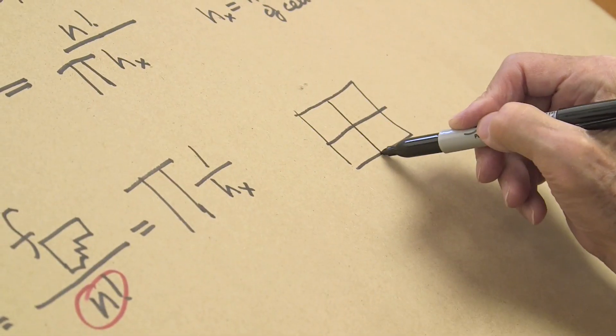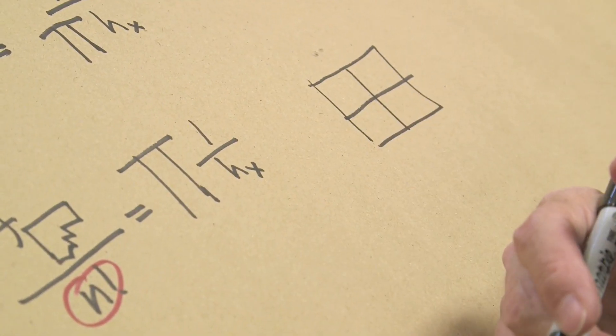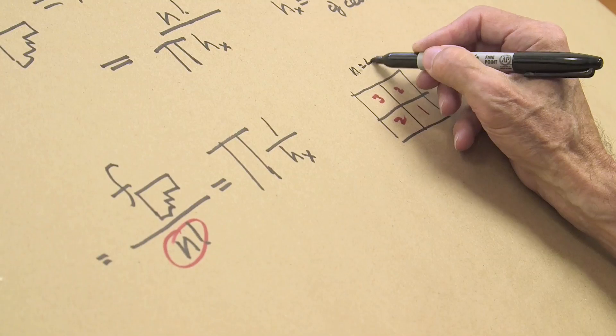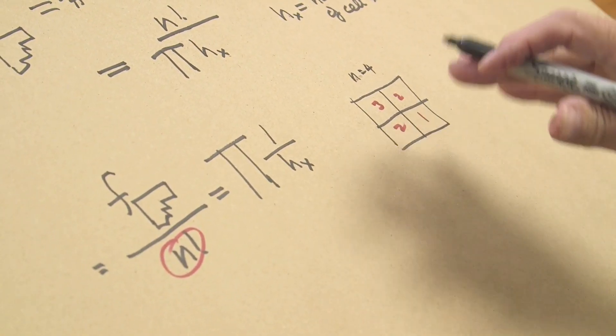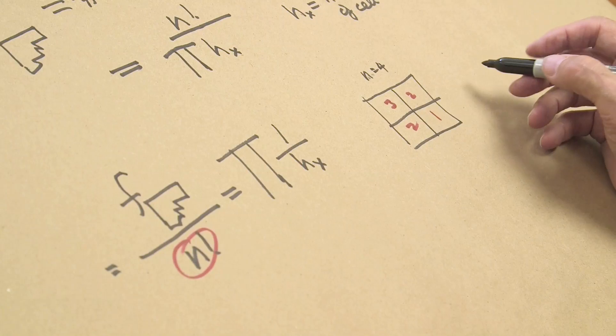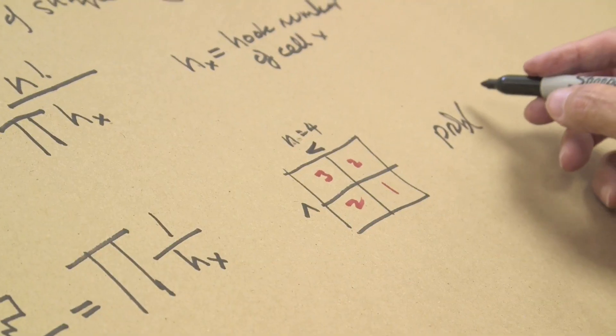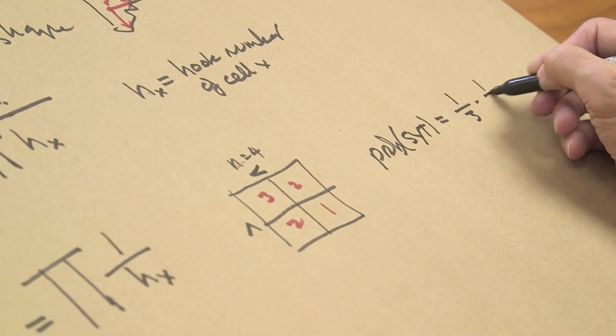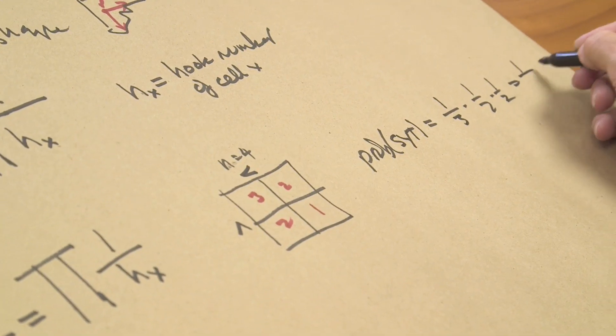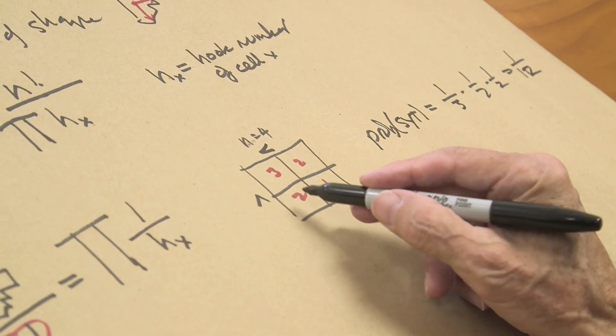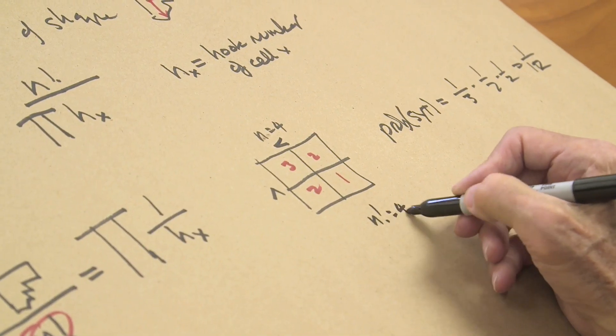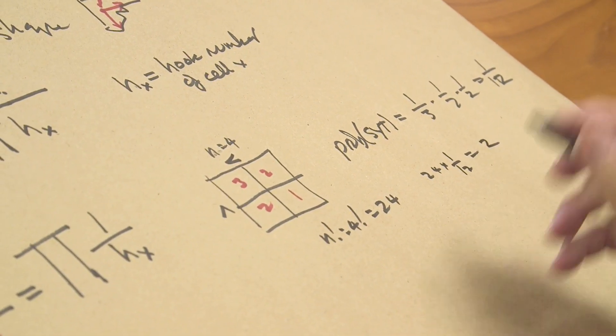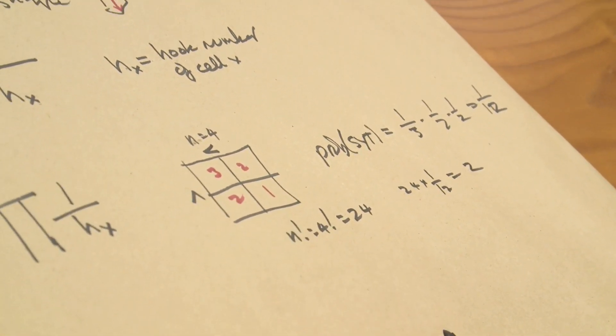Let's look at a particular example: two by two. We know that the number of standard tableaux is two. The hook numbers we've seen before: one, two, two, three. So n is four. So I'm saying that if I arrange the numbers from one to four in this shape, the probability that they will have these inequalities, the probability of it being a standard Young tableau, is one-third times one-half times one-half, which is one-twelfth. And the total number of arrangements is twenty-four, so n factorial is four factorial, which is twenty-four. And twenty-four times one-twelfth is two. So that's why f sub lambda is two.